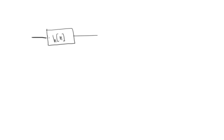Let's suppose you have a system whose impulse response is h of n, with input x of n and output y of n. If the system is causal, you cannot avoid a delay in the system. This system will always introduce some delay.